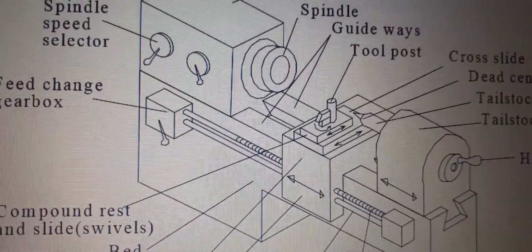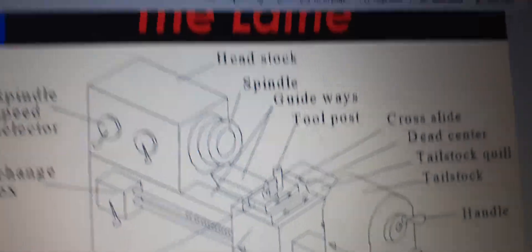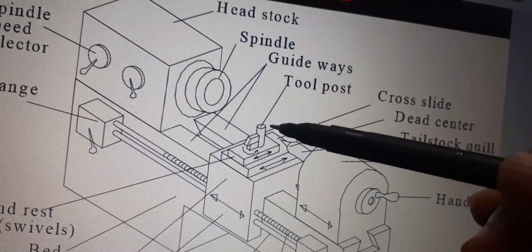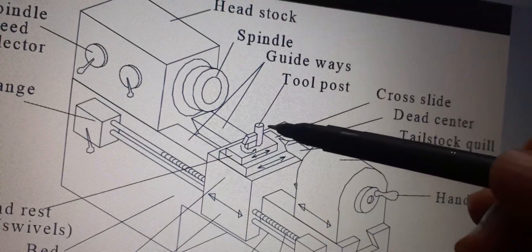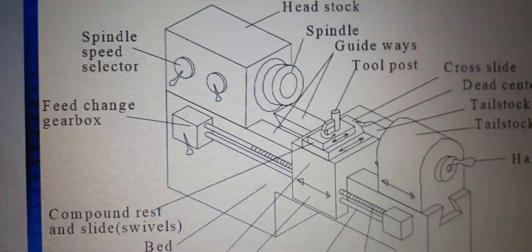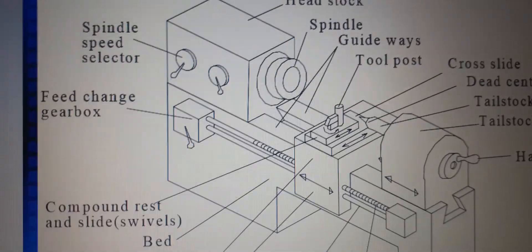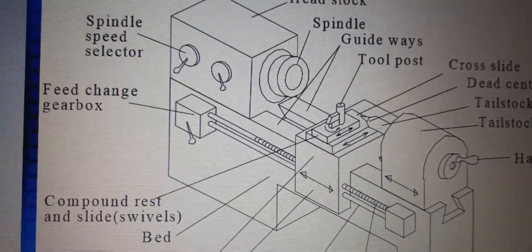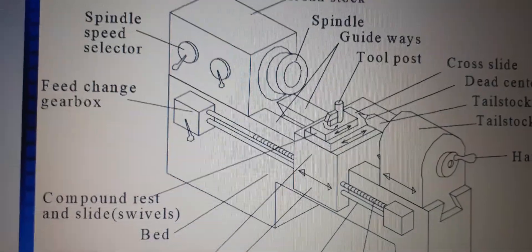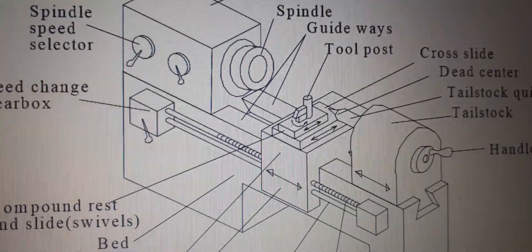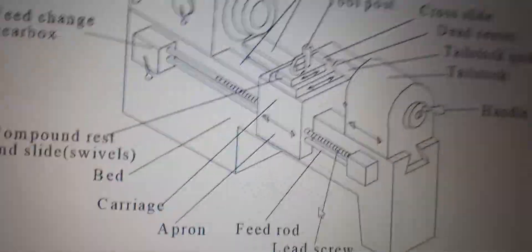The tool post, which you can see at the top of the carriage, is mounted on the cross slide and holds the tool rigidly. Depending on the need and design, tool posts vary in size and construction.